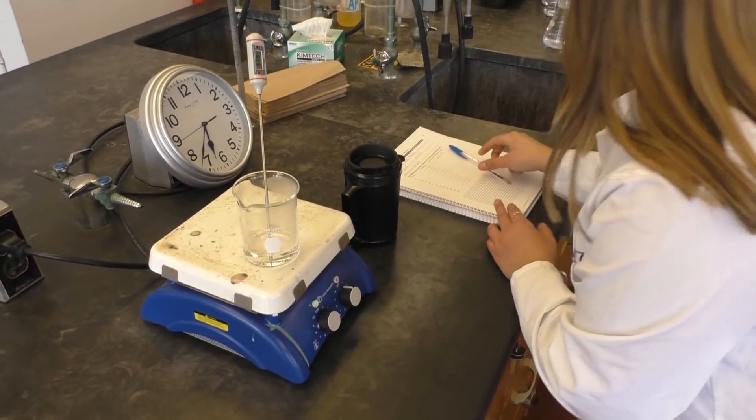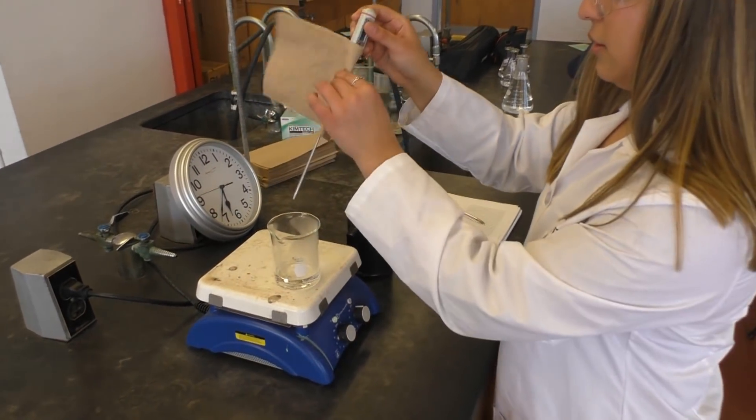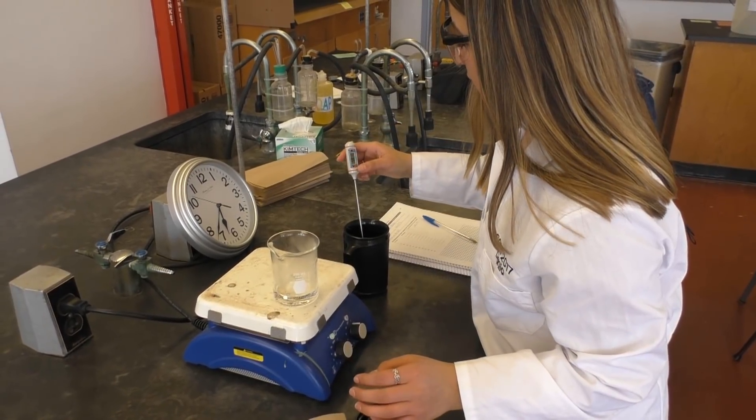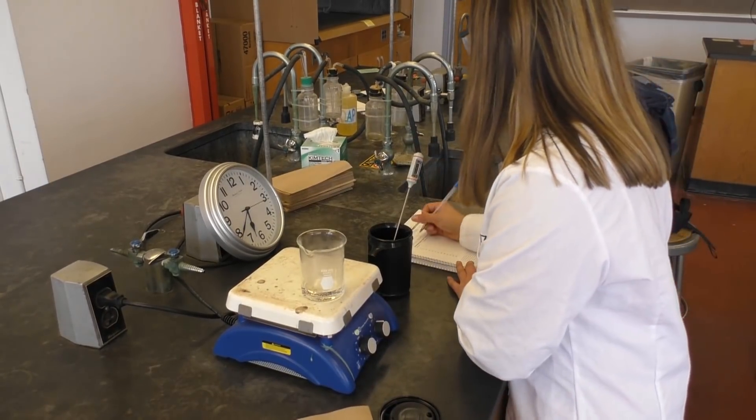Once your hot water has reached between 60 and 70 degrees, quickly write down its temperature. Then move your thermometer to your cold water in the calorimeter and write down its temperature.